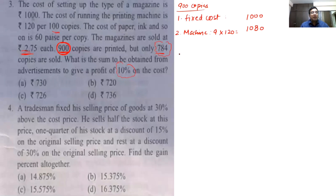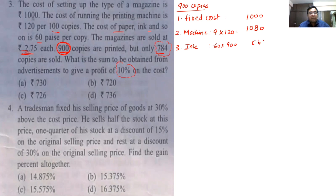The cost of paper, ink and so on is 60 paise per copy. So the ink cost for 900 copies is Rs.540. Total cost: 1000 plus 1080 plus 540 — that gives Rs.2620 as my total cost incurred on producing 900 units.